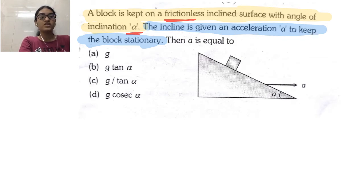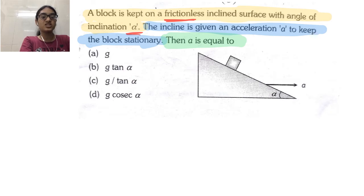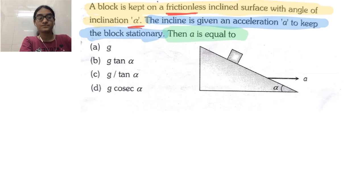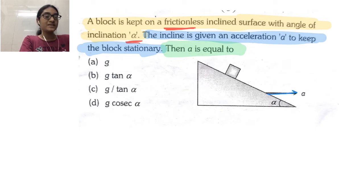The question asks for the value of A, expressed in terms of G and alpha. First, we draw all forces on the block. The incline is going forward with acceleration A, so a pseudo force will act on the block in the backward direction with the same acceleration A. So pseudo force equals MA in the opposite direction.